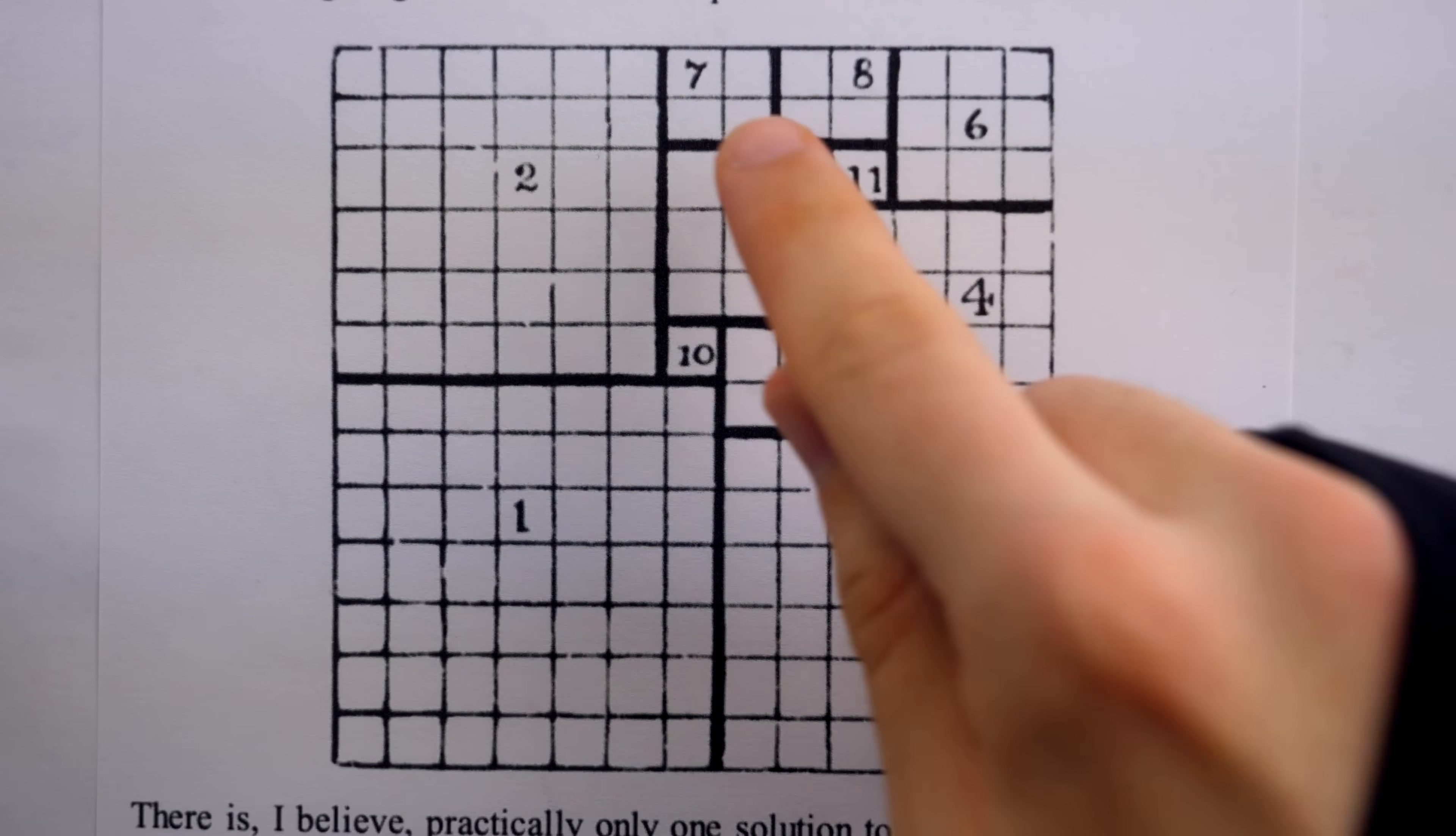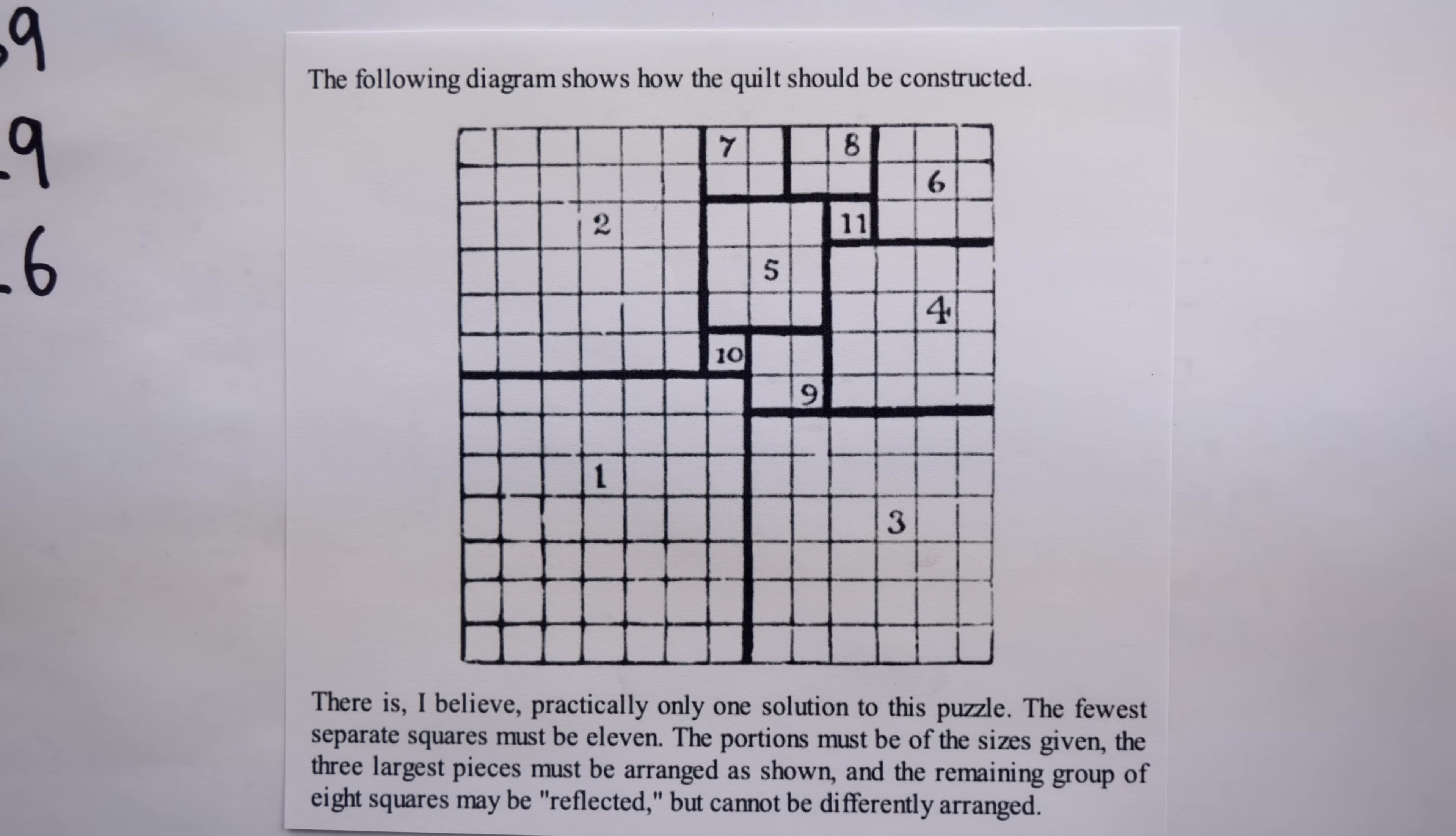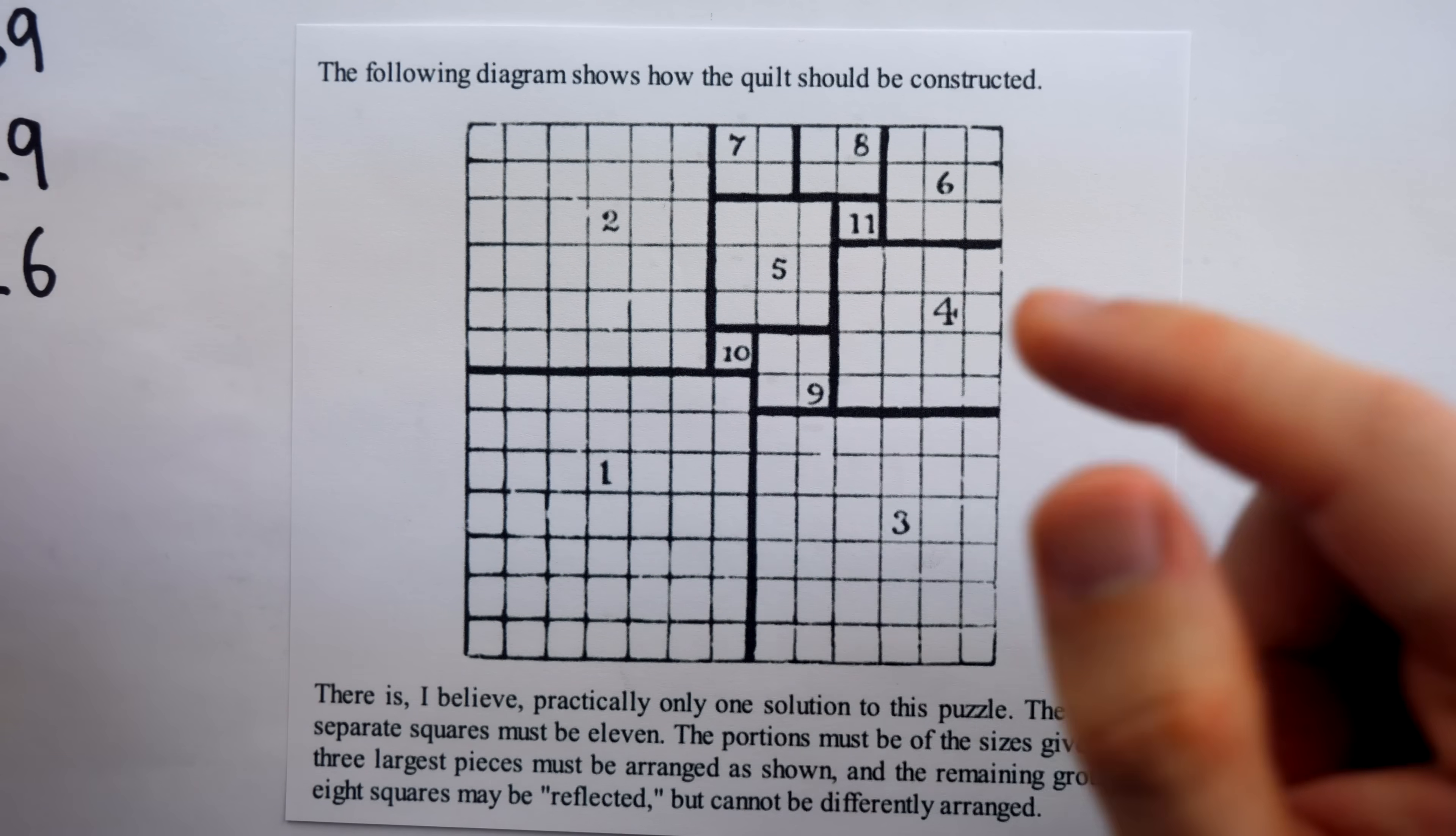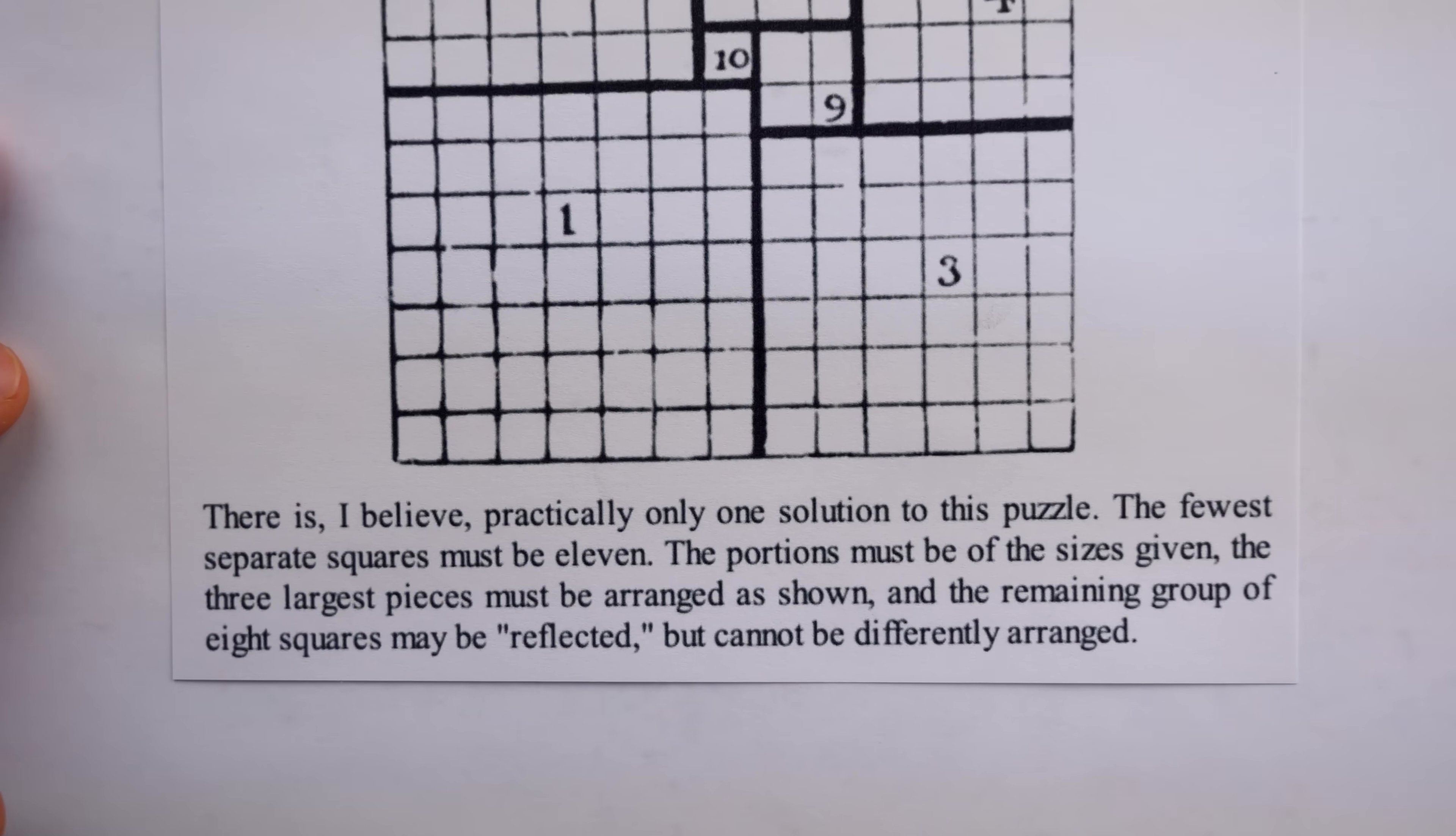Note that the numbers inside the square pieces are just counting them, so you can see that it counts up to 11 square pieces total. Later, as this problem would continue to be studied, the convention becomes to put the side length of the square inside of the square. So inside this one would say 4 because it's 4x4, inside this one would say 2 because it's 2x2. That's just the convention these days.